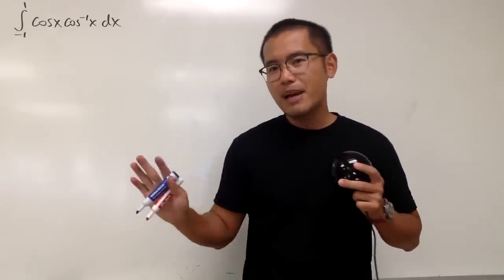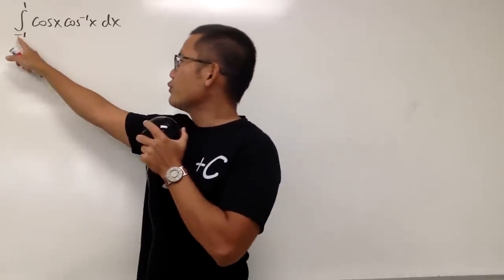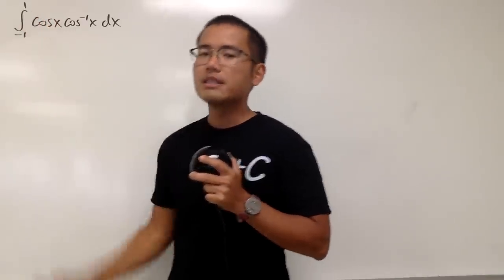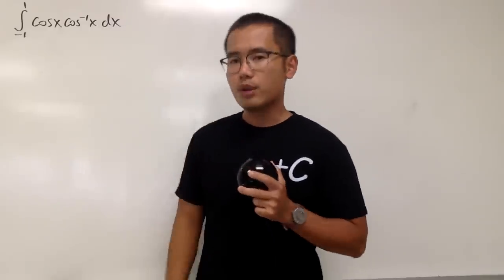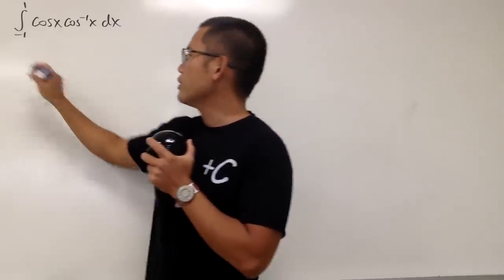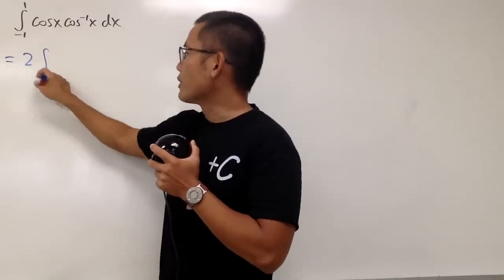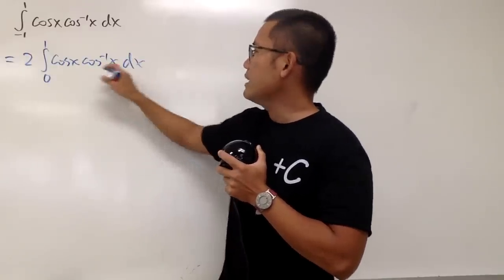In fact, this integral is actually not that fair at all, because, you see we are going from negative 1 to 1, and cos is even, inverse cos is also even, so we can actually just have 2 times the integral, but we have to go from 0 to 1, like this.